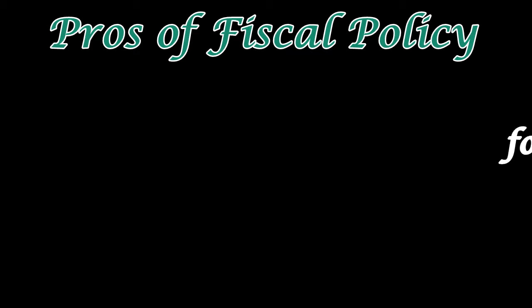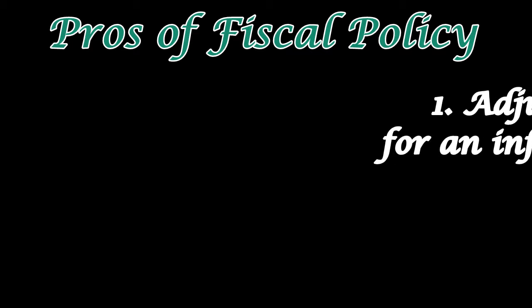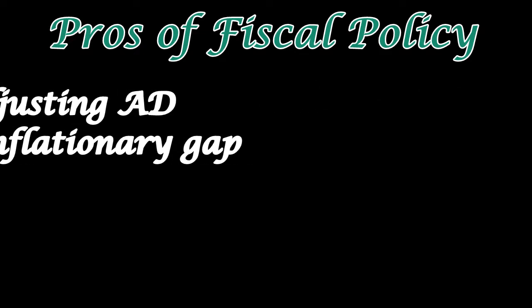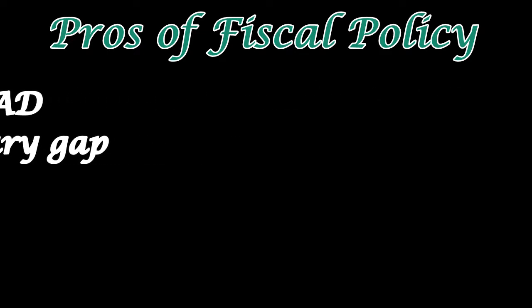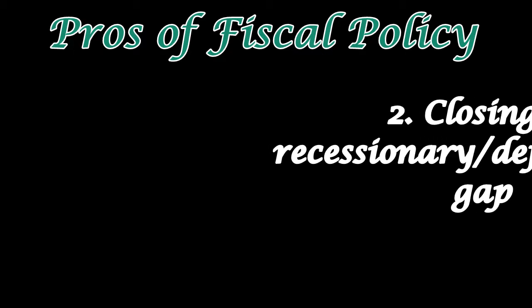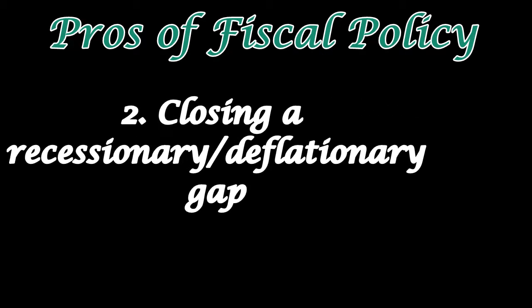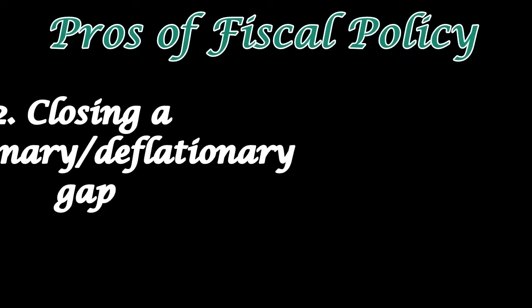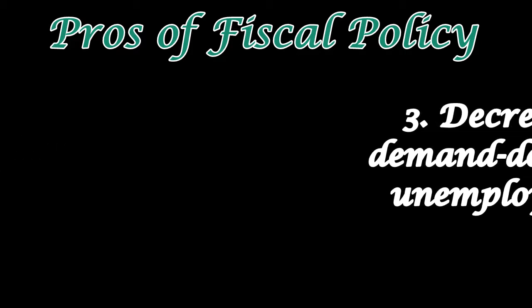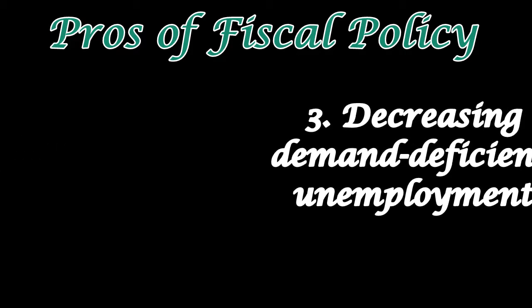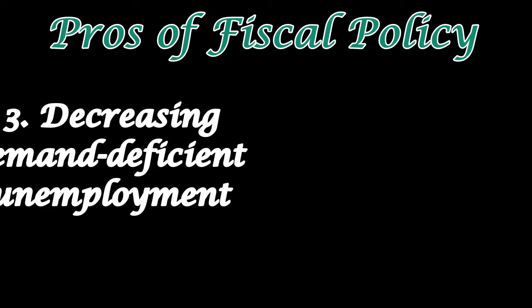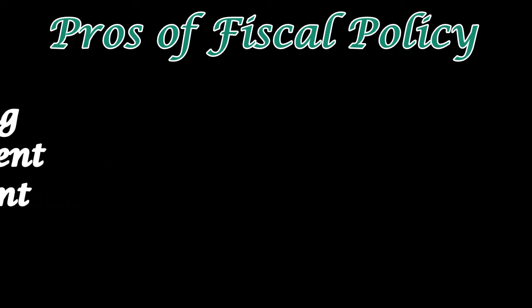Number one: when GDP and AD are too high, contractionary fiscal policy is the appropriate response. Number two: fiscal policy can be used to close the recessionary and deflationary gap — check out our notes on the business cycle for more on that. Number three: fiscal policy is the right response to demand-deficient unemployment, which will be covered more in the unemployment notes.